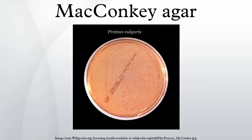Variant: a variant, sorbitol-MacConkey agar, can assist in the isolation and differentiation of enterohemorrhagic E. coli serotype E. coli O157:H7, by the presence of colorless circular colonies that are non-sorbitol fermenting.